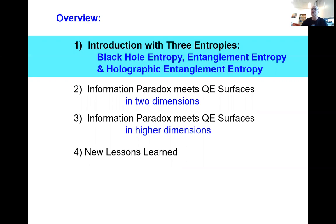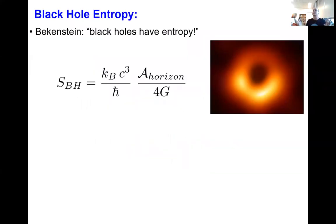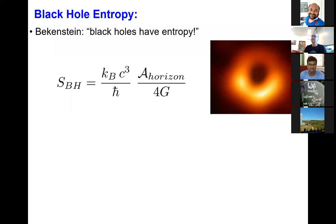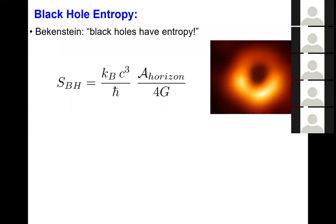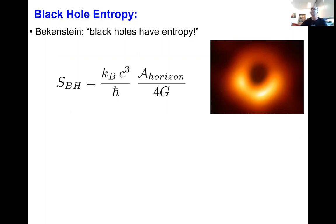I'll kick off with black hole entropy. This was a remarkable discovery — it's almost 50 years old now. Jacob Bekenstein, when he was still a grad student, started thinking about black holes and information theory, and came to the conclusion that black holes have entropy. This was really a breakthrough. At the time, black holes were elegant solutions of Einstein's equations, a playground for mathematical physics, but not thought about in the context of information theory.